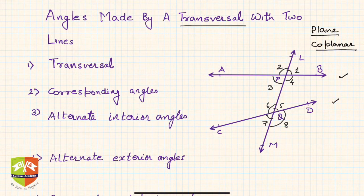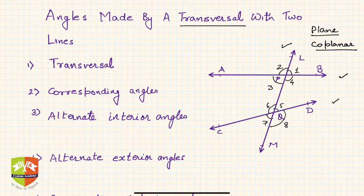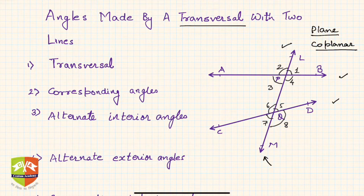We have two coplanar lines here, AB and CD, and there is another line which intersects the two given lines AB and CD at points P and Q. This line LM intersects the two given lines in the same plane. This line LM is called the transversal.